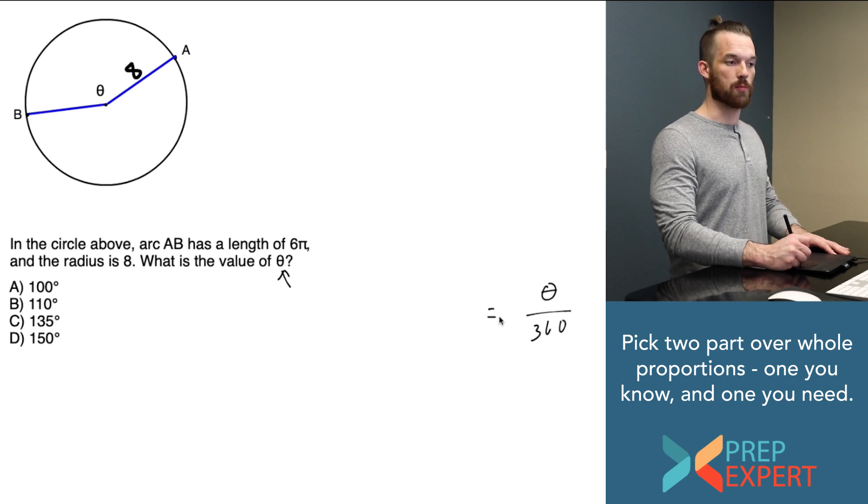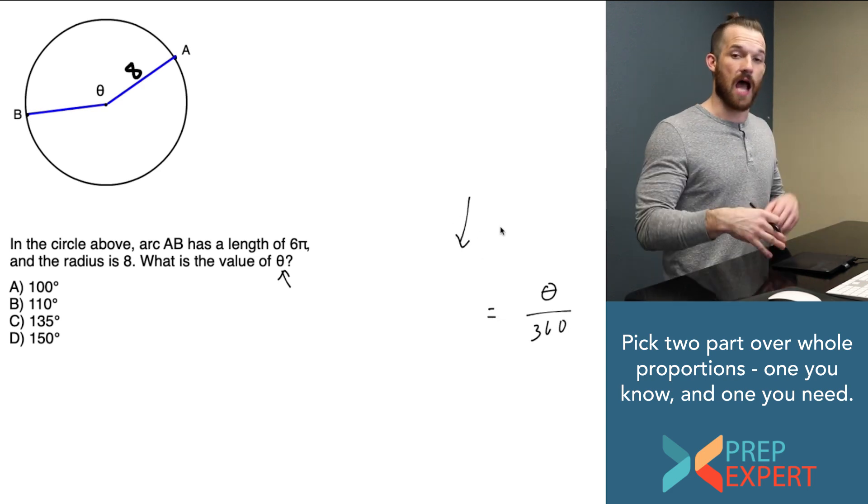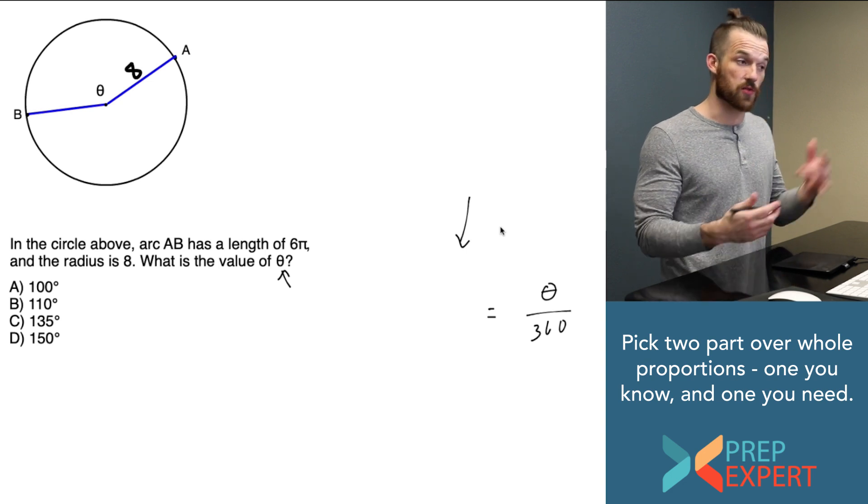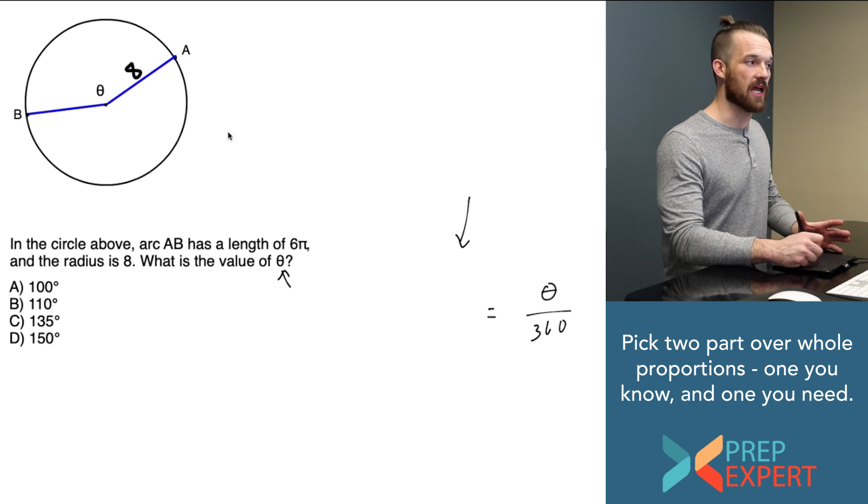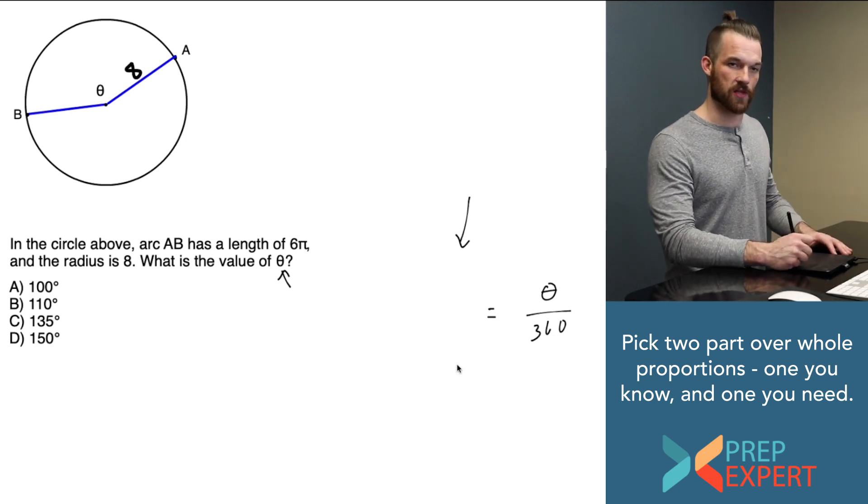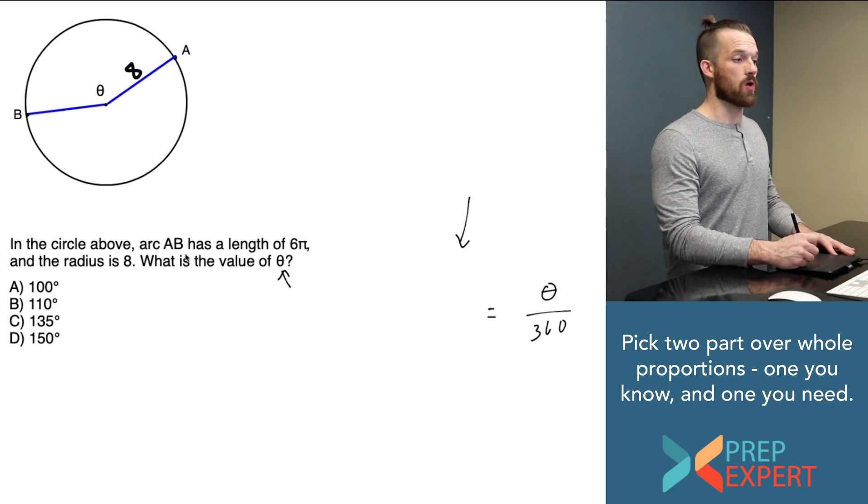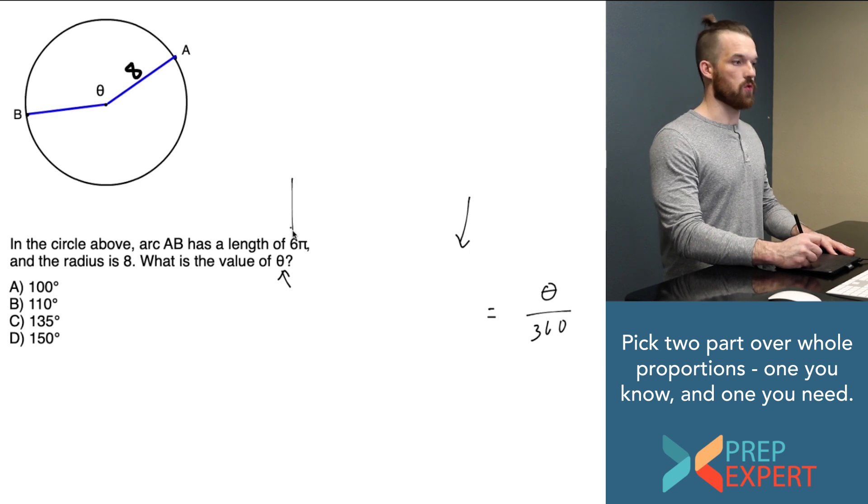Now I've just got to find what proportion I can set that equal to. I want it to be something that I can complete so that I can then solve for theta. Do I know the area of the sector? They haven't told me the area of the sector. What about arc length? Well, now they have told me arc length.